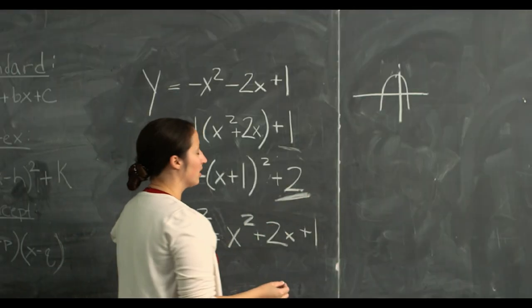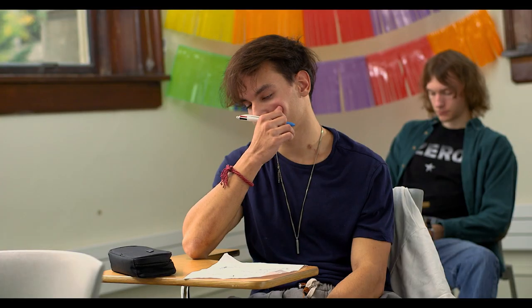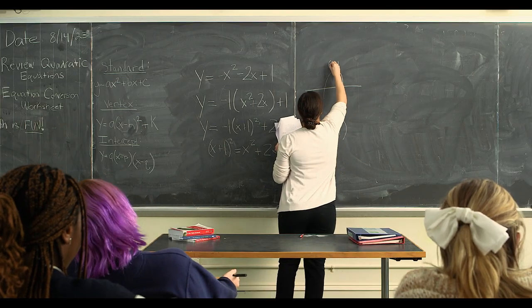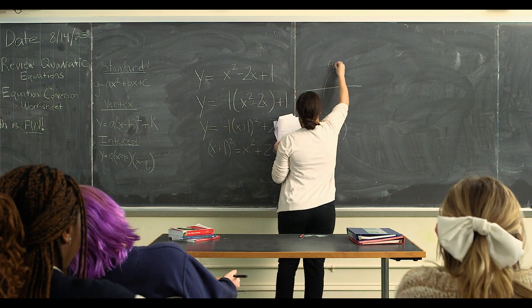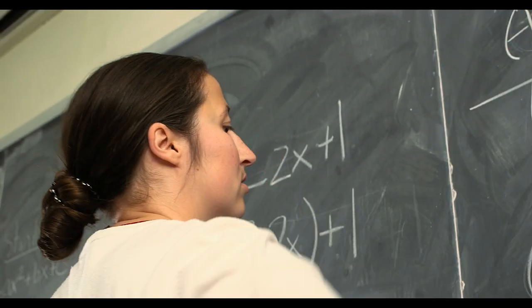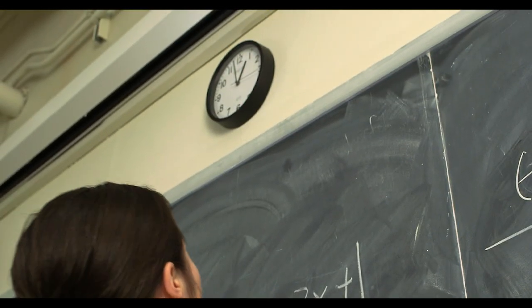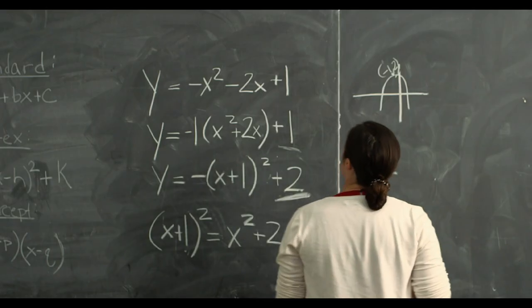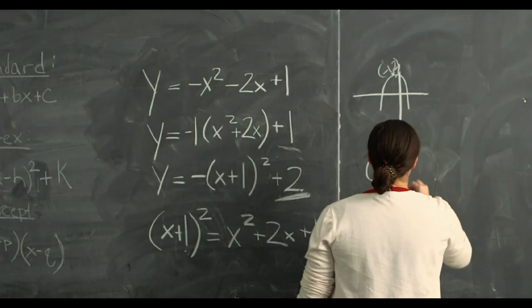Can anyone tell me the vertex? The vertex is (h, k), so looking at our equation, it would be negative 1, 2. Quickly before we have to leave, the question asks for the intercept, and we get that from the original equation. So c equals 1.